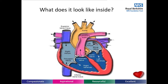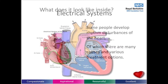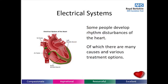The electrical system of the heart includes the SA node, AV node, and the right and left bundles. It is this system that activates the heart muscle to pump. This system can be damaged and this can result in rhythm disturbances. There are many causes and various treatment options for this.